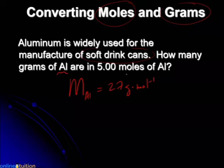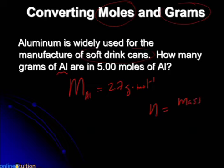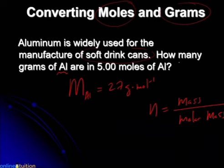Mass cannot be created or destroyed, but converted from one form into another. This is a really beautiful illustration of conservation of mass — and that's the reason why we balance chemical equations. Mass is conserved.